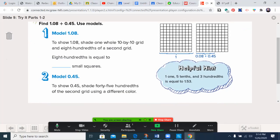Helpful hand is always the first thing you should look at. 1, 1, 5 tenths, and three hundredths is equal to 1.53. Okay, good to know. So we're going to add one and eight hundredths plus forty-five hundredths.